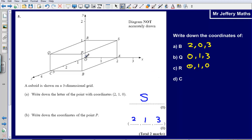C, C is going to be 0 out on the x-axis, then it's 0 up on the y-axis, and then it is 3 along on the z-axis.